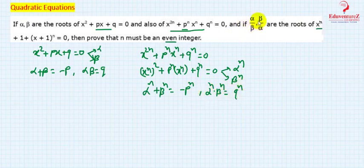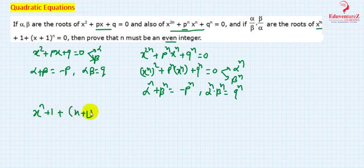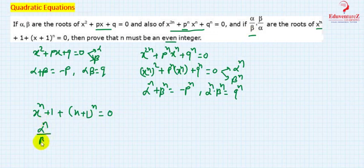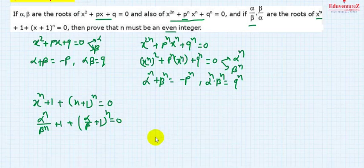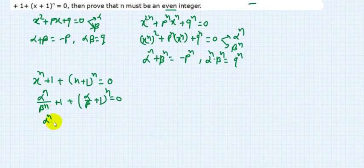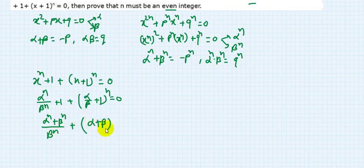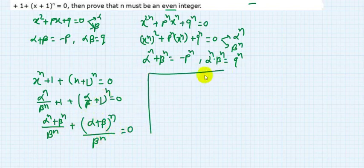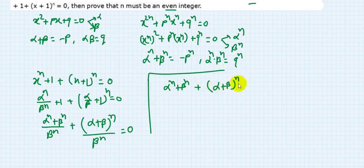Now, alpha by beta and beta by alpha are roots of (x to the power n+1 plus x plus 1) to the power n equal to 0. Substituting alpha by beta into this equation, we get: (alpha by beta) to the power n+1 plus (alpha by beta) plus 1 whole to the power n equals 0. This simplifies to: alpha to the power n plus beta to the power n plus (alpha plus beta) to the power n, divided by beta to the power n, equals zero.